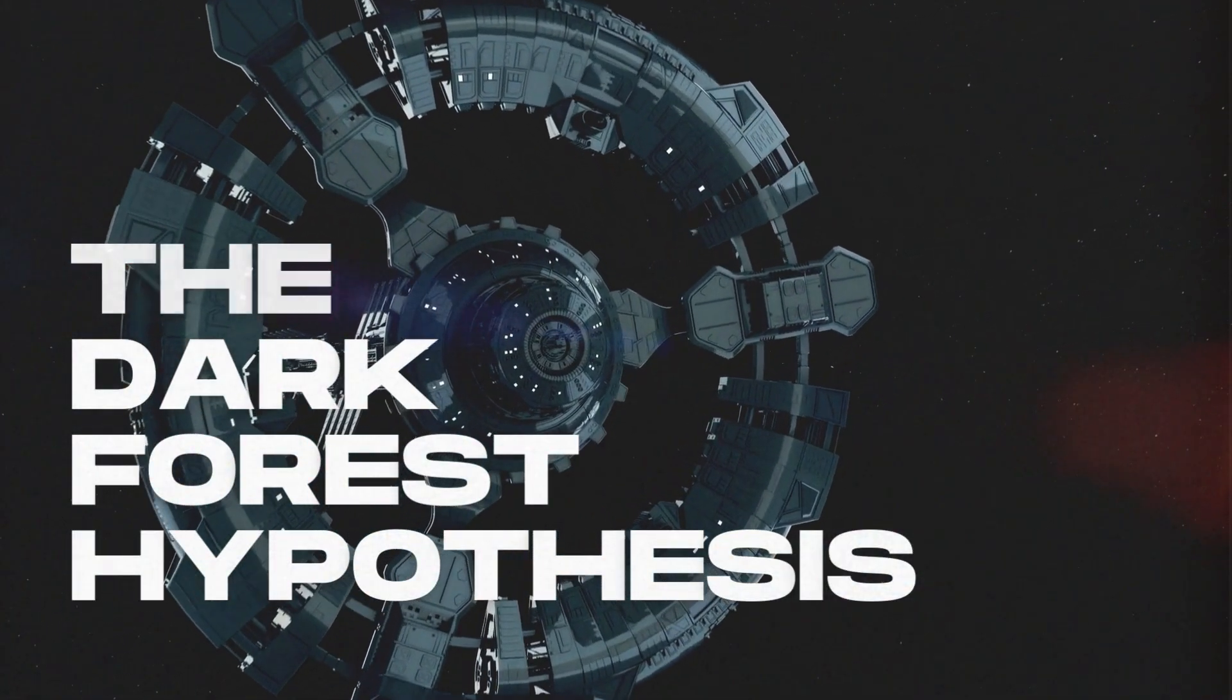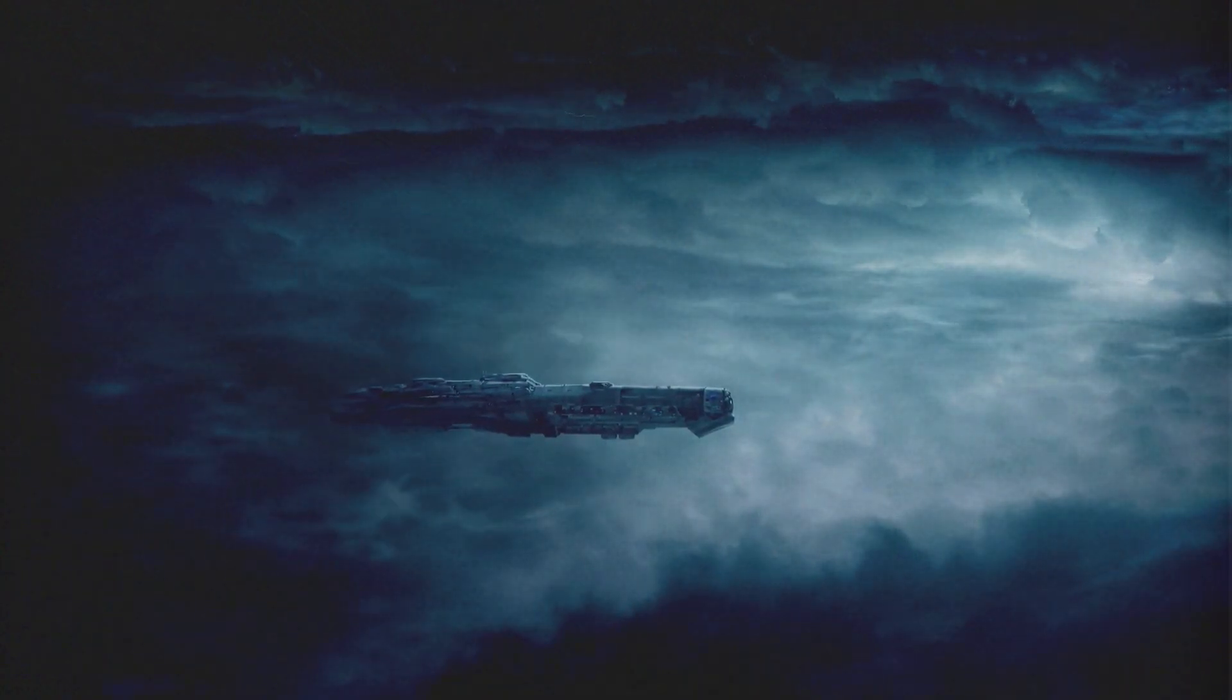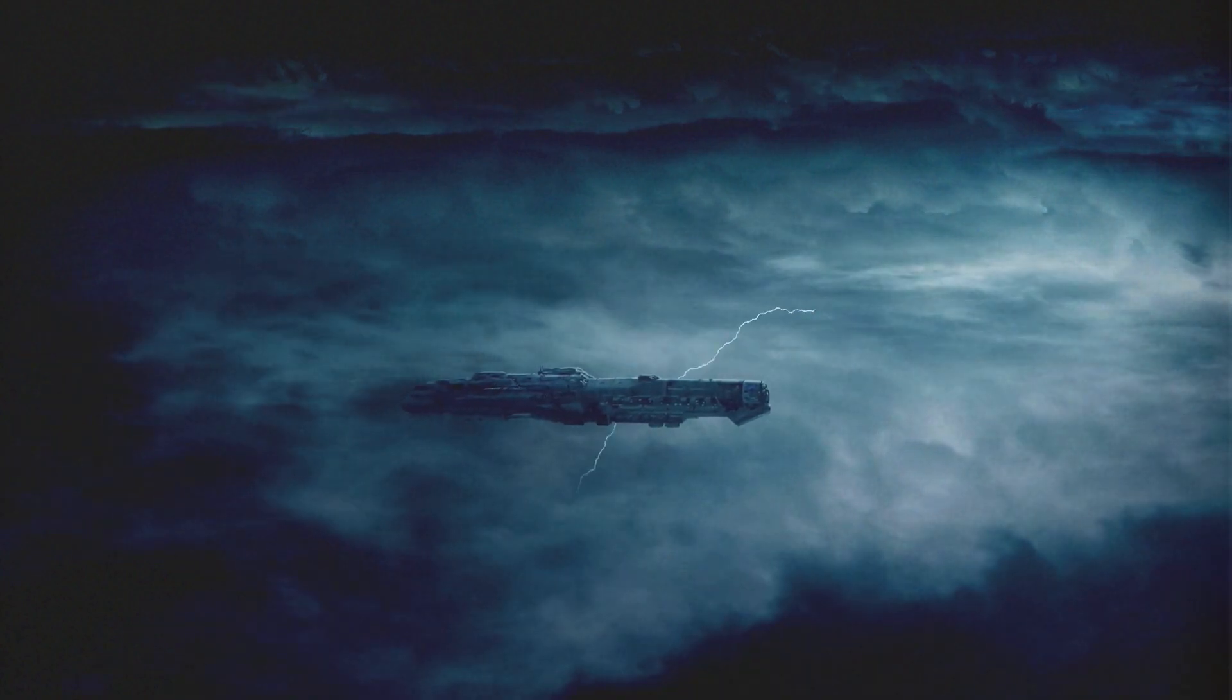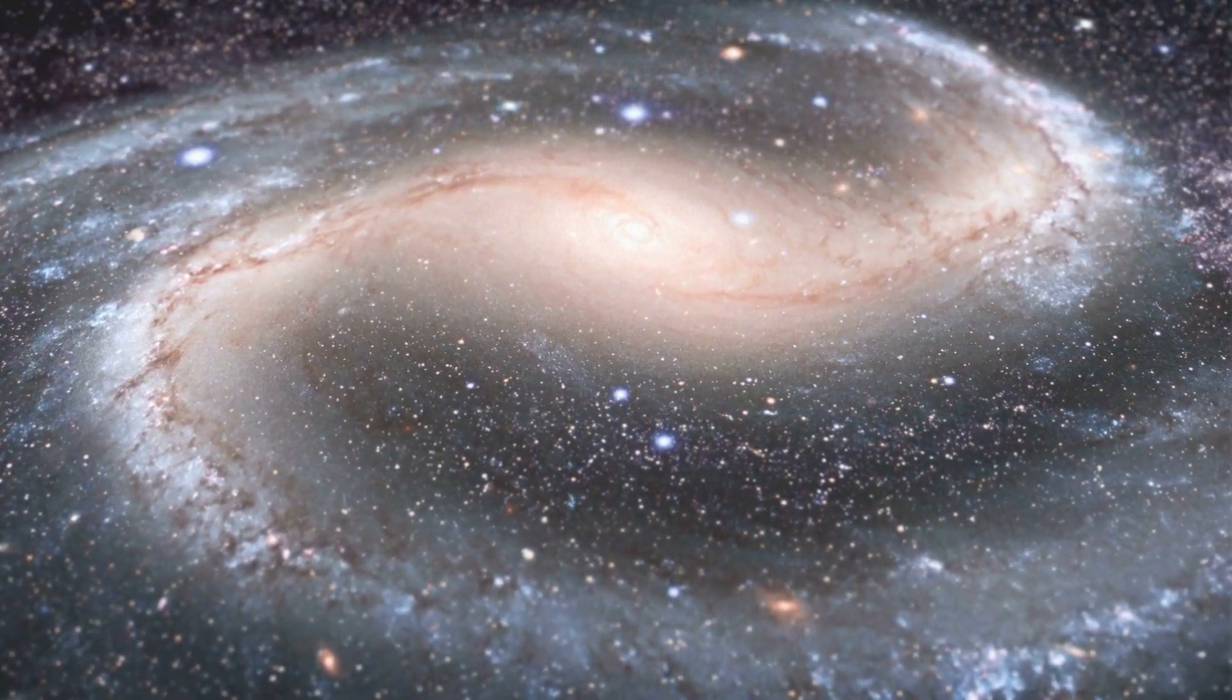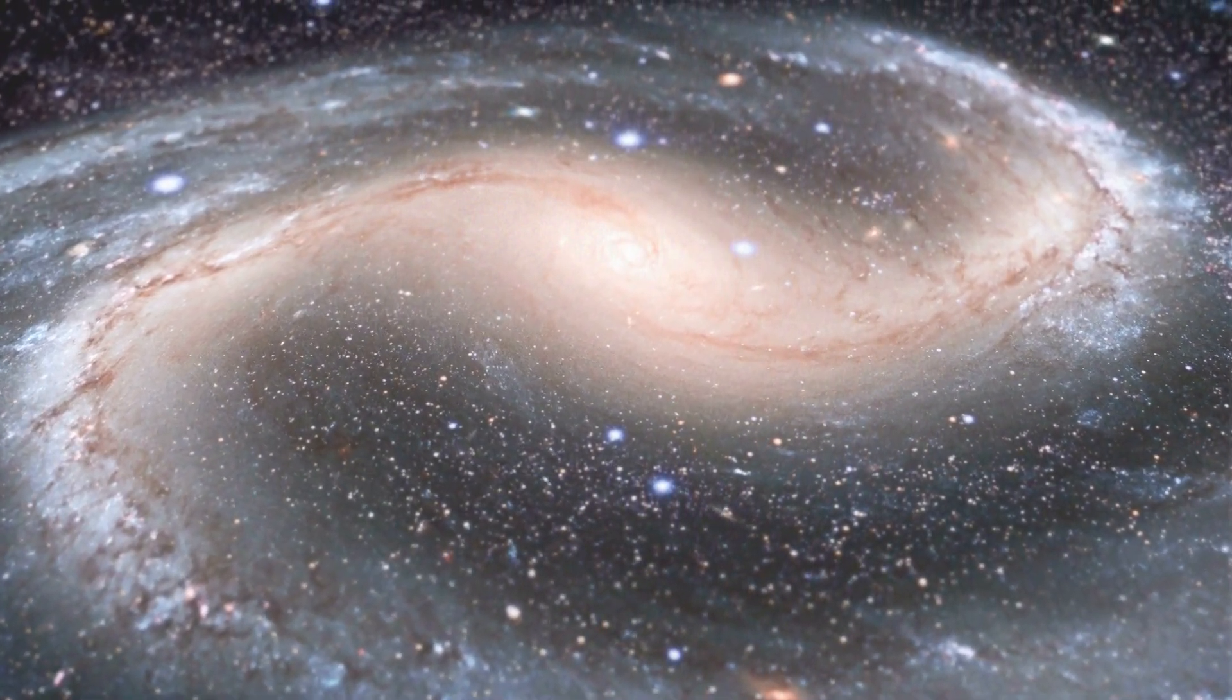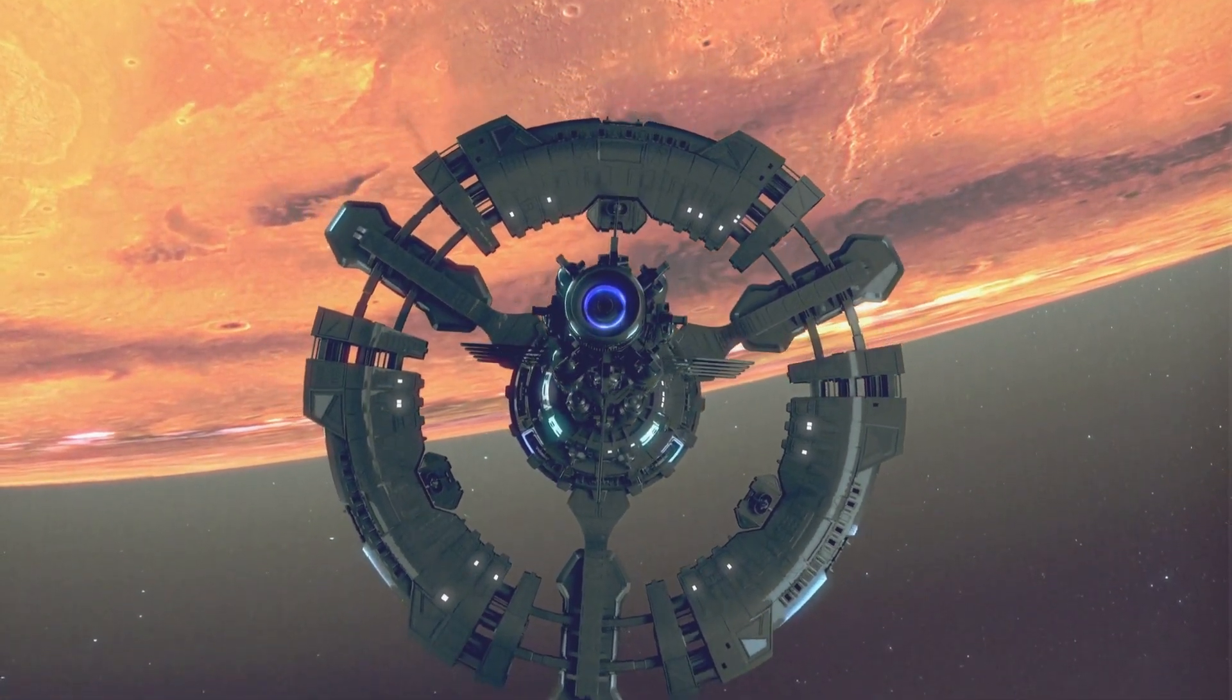The dark forest hypothesis suggests that there are many alien civilizations throughout the universe, but these civilizations remain silent and hidden due to the fear of being destroyed by another unknown, hostile civilization. According to this theory, any spacefaring civilization would see other intelligent life as a potential threat, and thus, civilizations would destroy any signs of life before making contact. As a result, the universe appears silent, with no detectable signals from alien civilizations. The hypothesis plays on the idea that, in a universe filled with limited resources, the best strategy for survival would be to eliminate potential threats before they have a chance to grow and challenge your own species. This shoot-first-and-ask-questions-later approach explains the lack of communication between intelligent life forms, as any civilization might consider broadcasting its existence as too dangerous.